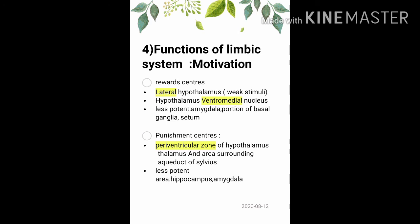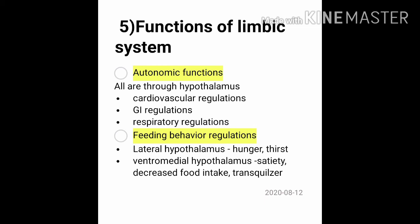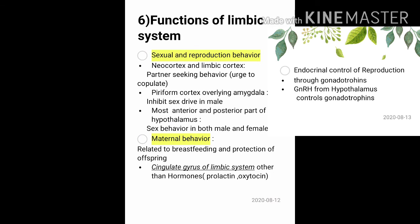Reward and punishment centers form the basis of learning and memory. Autonomic functions are all mediated through the hypothalamus, including cardiovascular, gastrointestinal, and respiratory regulation. Feeding behavior regulation is also through the hypothalamus: the lateral hypothalamus acts as the center for hunger and thirst, while the ventromedial hypothalamus acts as the satiety center — it decreases food intake and creates a tranquilizer-type feeling of complete relaxation, and also acts as a reward center.